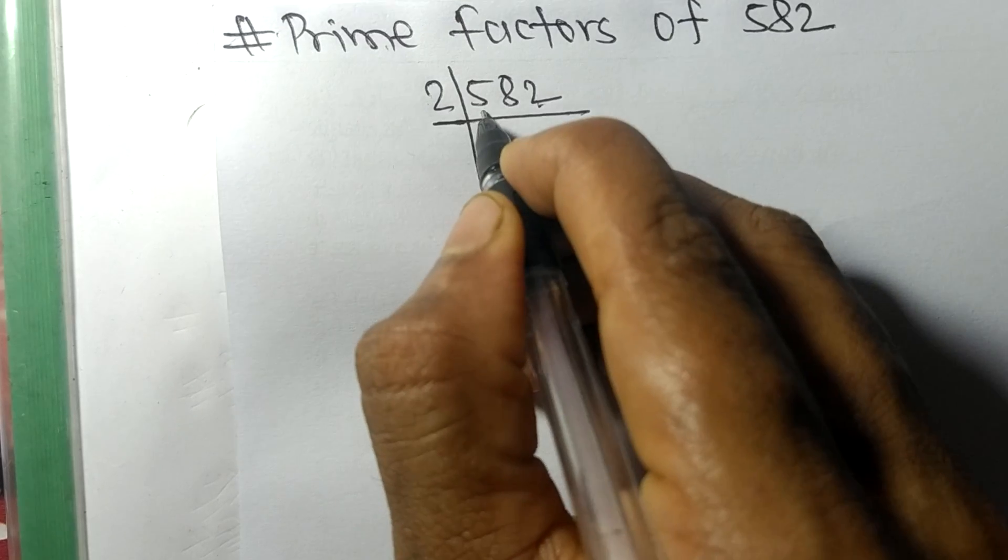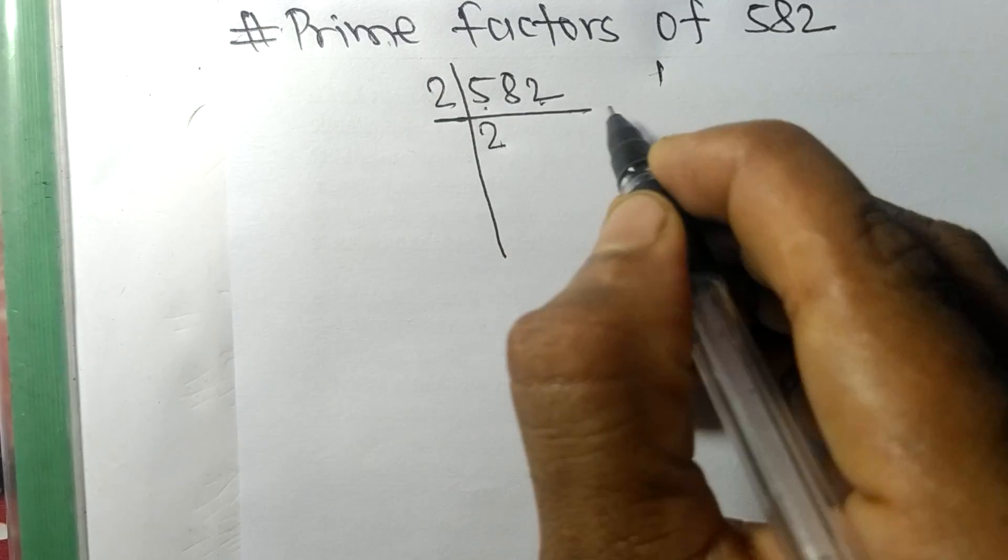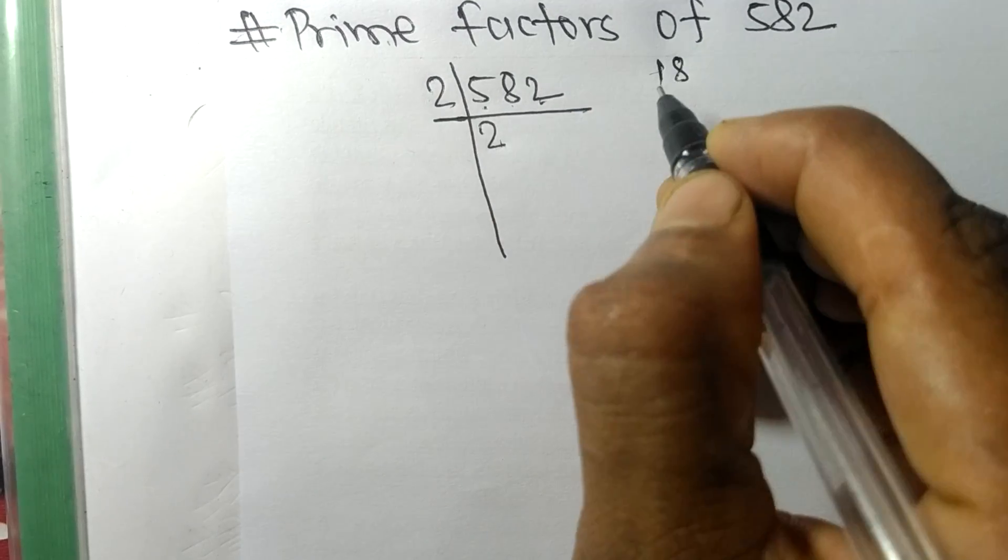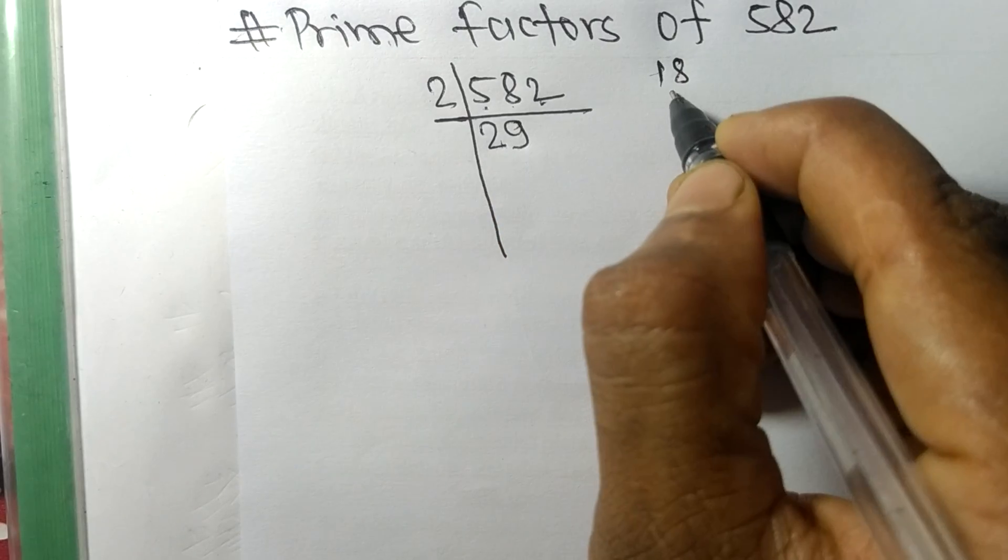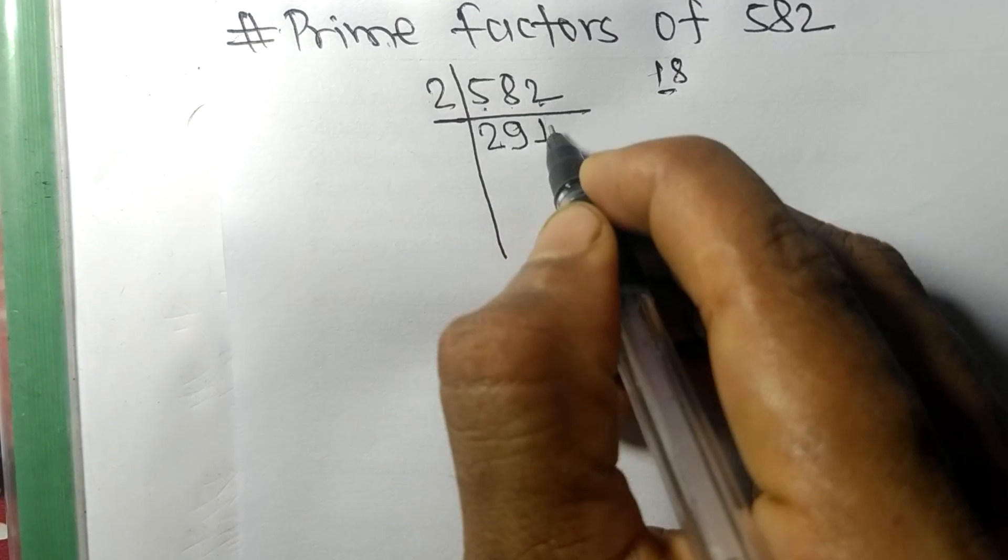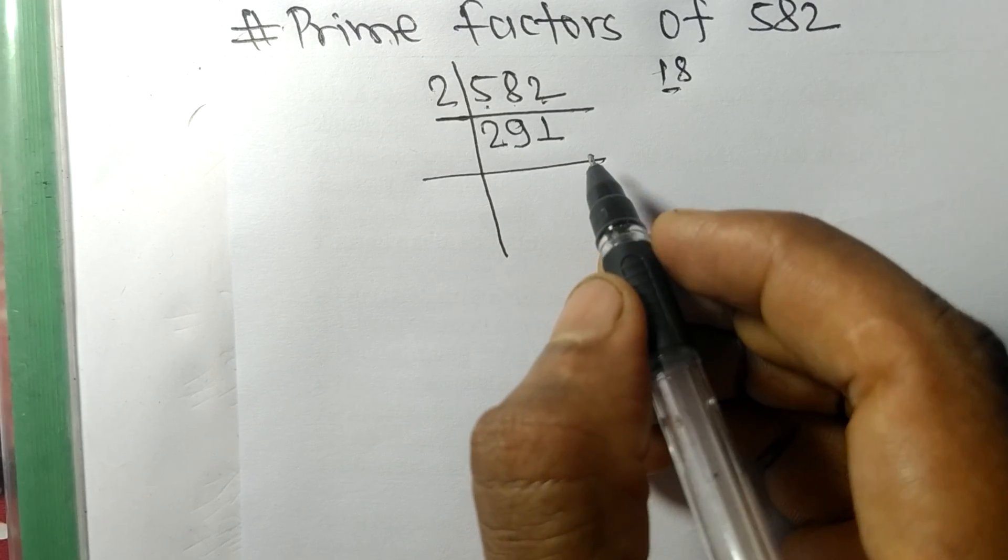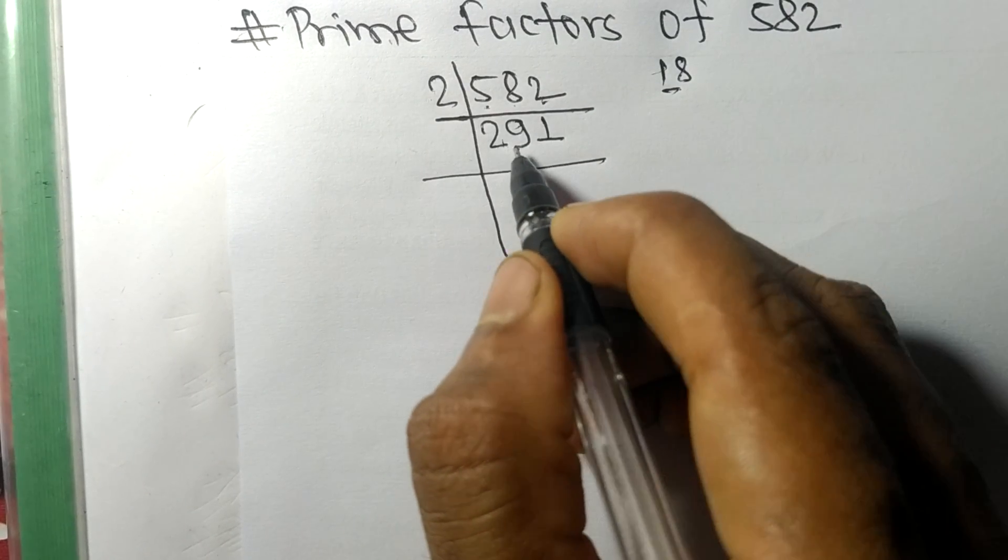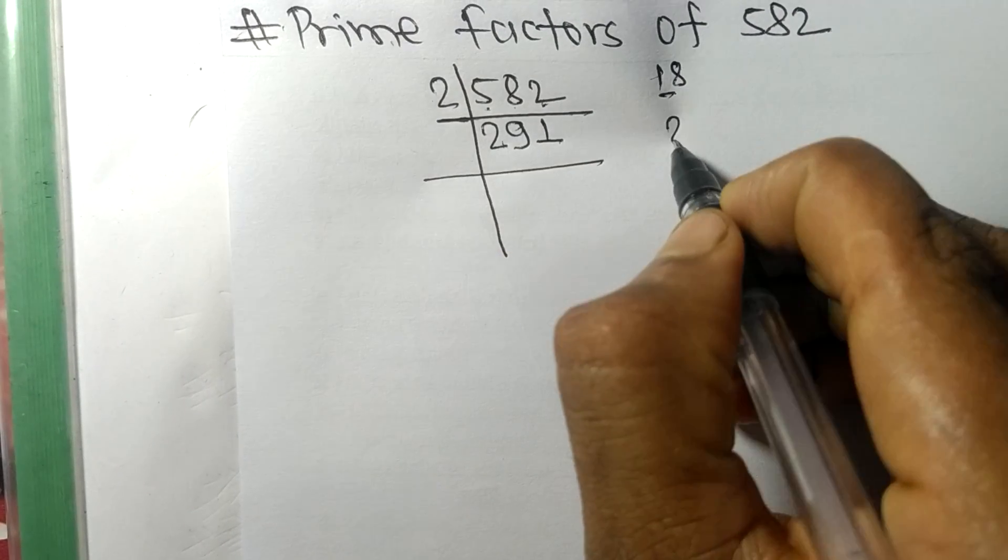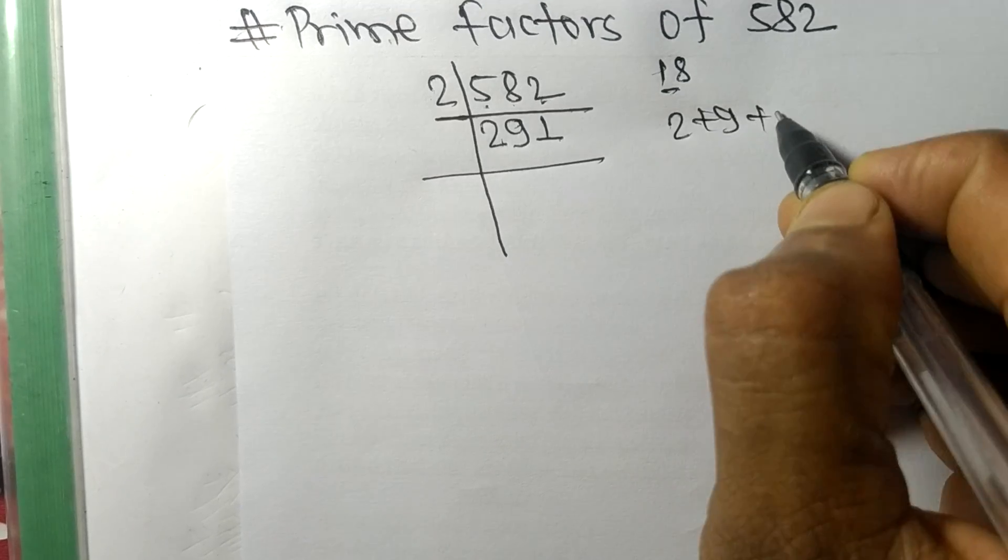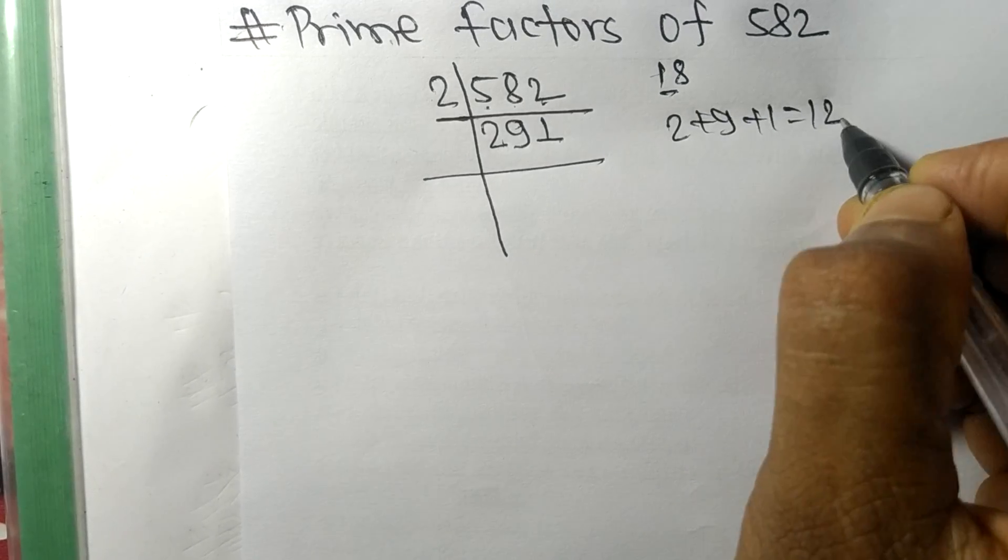2 times 2 means 4 remainder 1, and this 8, 18, 2 times 9 means 18, and 2 times 1 means 2. So now we got 291. And when we add all these numbers, that is 2 plus 9 plus 1, then we get 12.